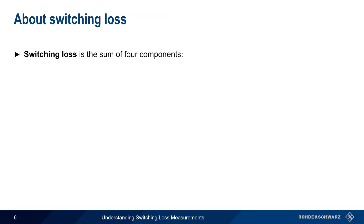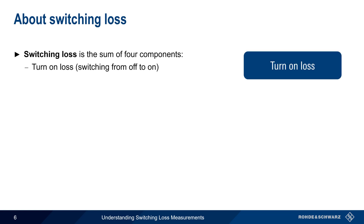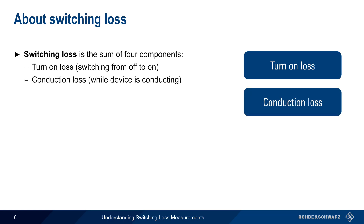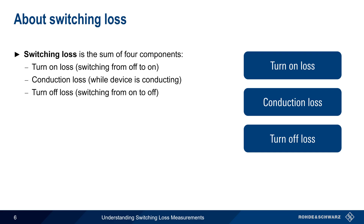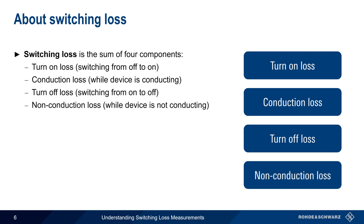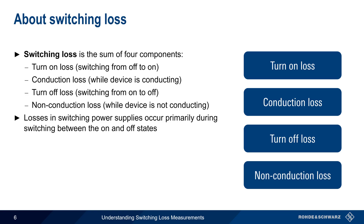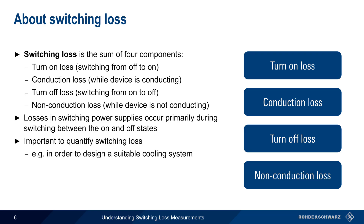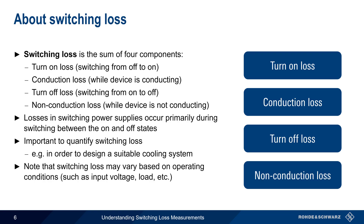Power loss in a switching device is commonly called switching loss and is the sum of four separate loss components: turn-on loss when switching from the OFF to the ON state, conduction loss in the ON state, turn-off loss when switching from the ON to the OFF state, and non-conduction loss while in the OFF state. The vast majority of power is lost during the transitions. It's important to be able to quantify switching loss, for example in order to design a suitable cooling system, and it's worth keeping in mind that switching loss may vary based on operating conditions such as input voltage, load characteristics, etc.